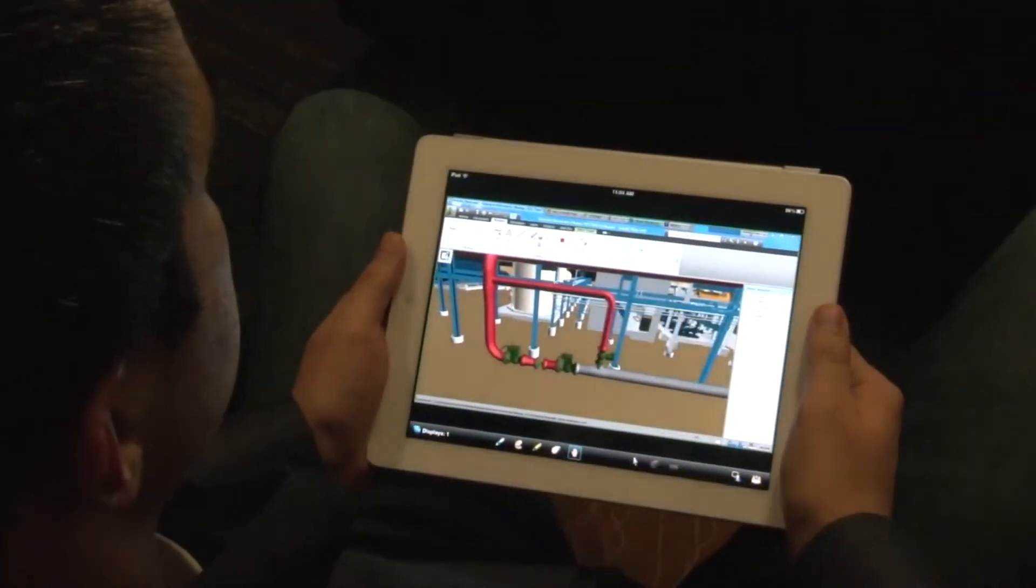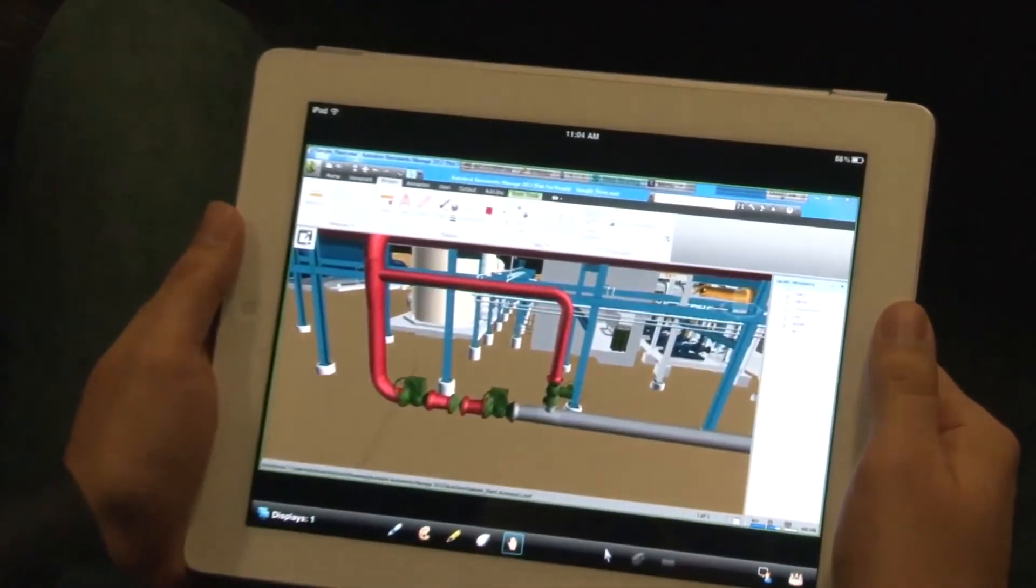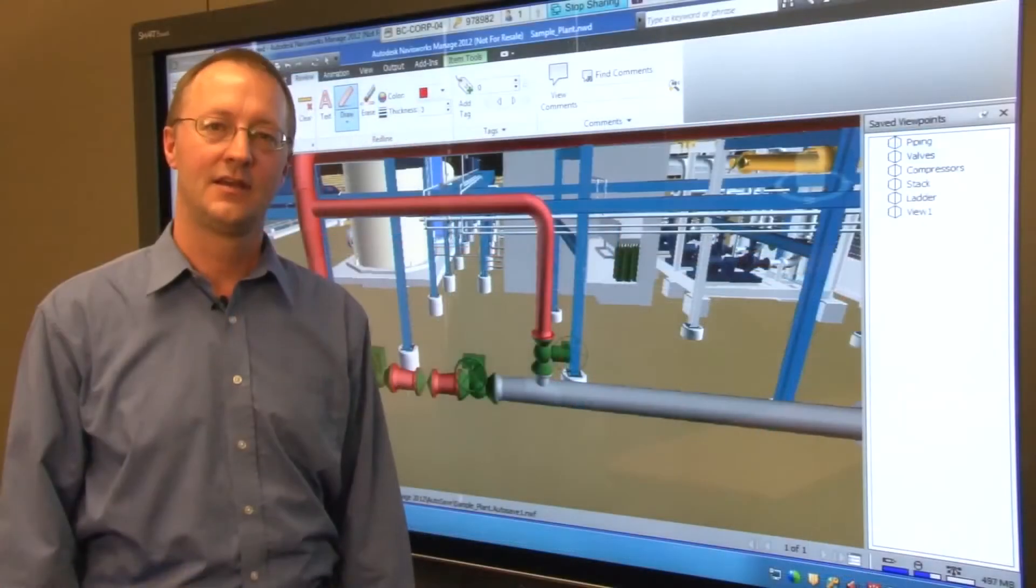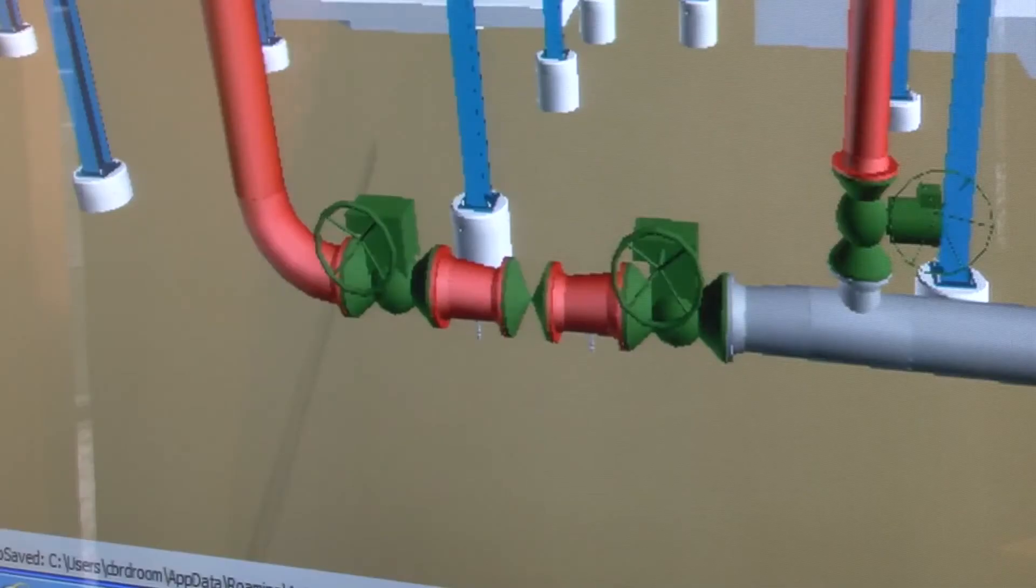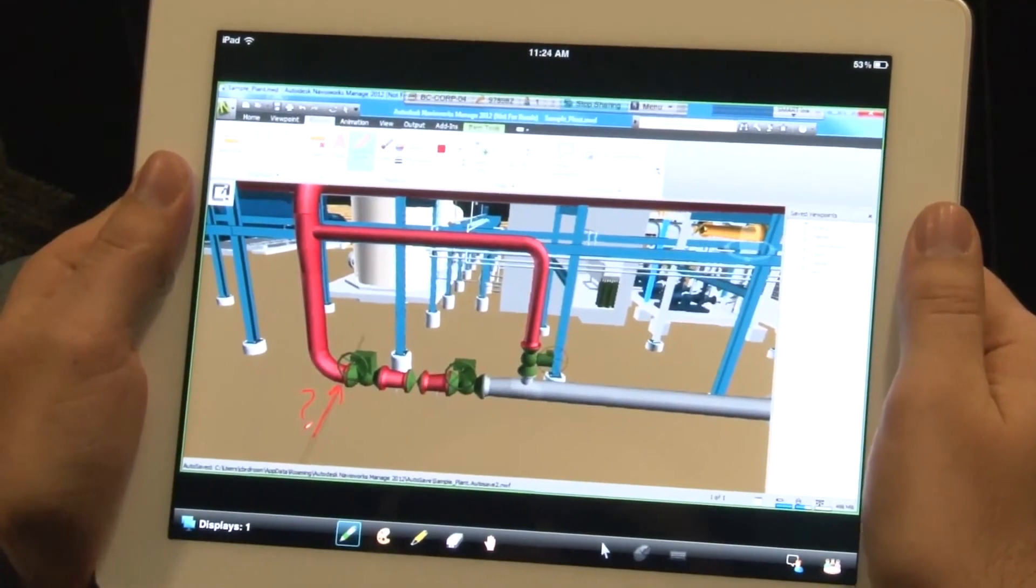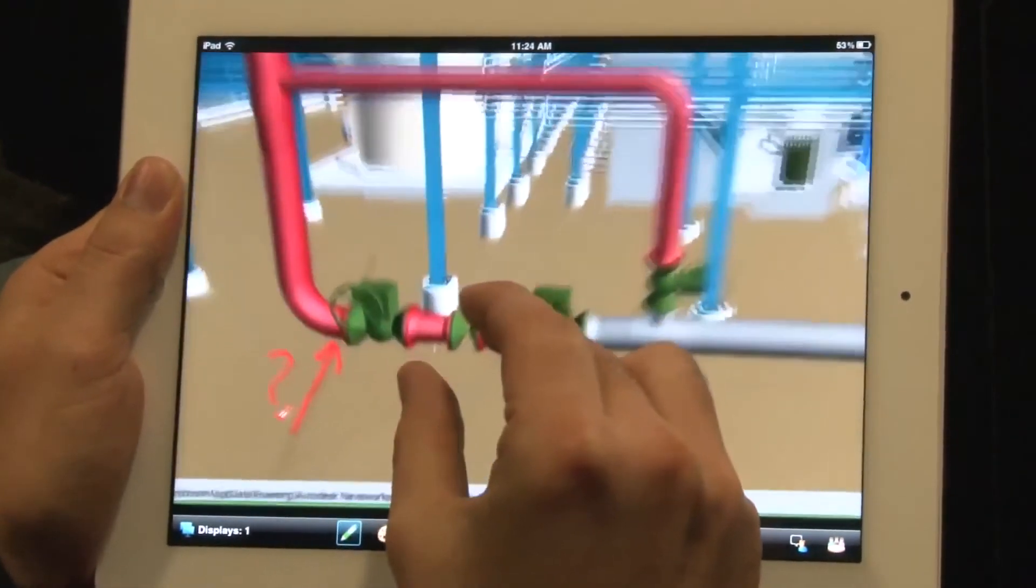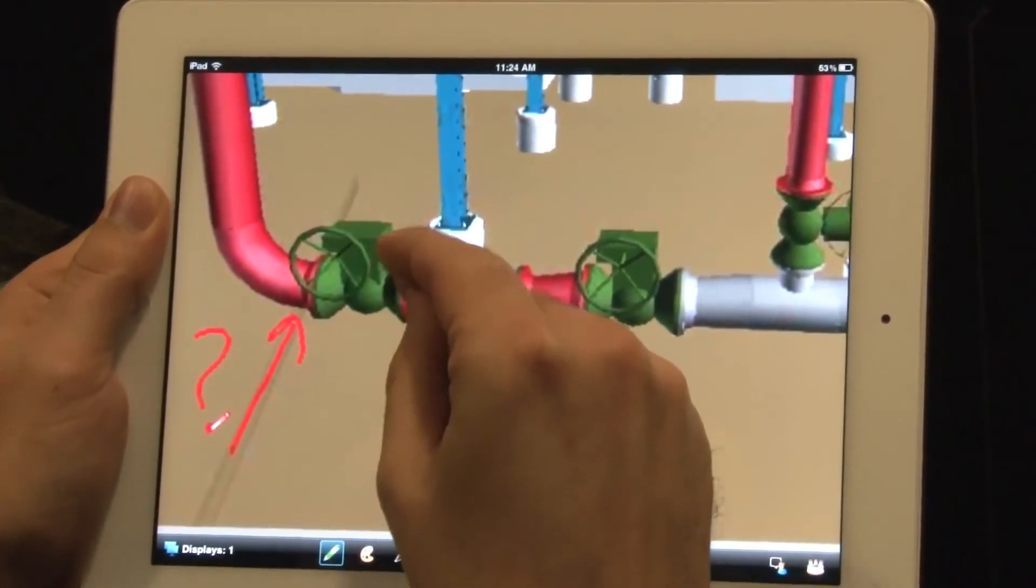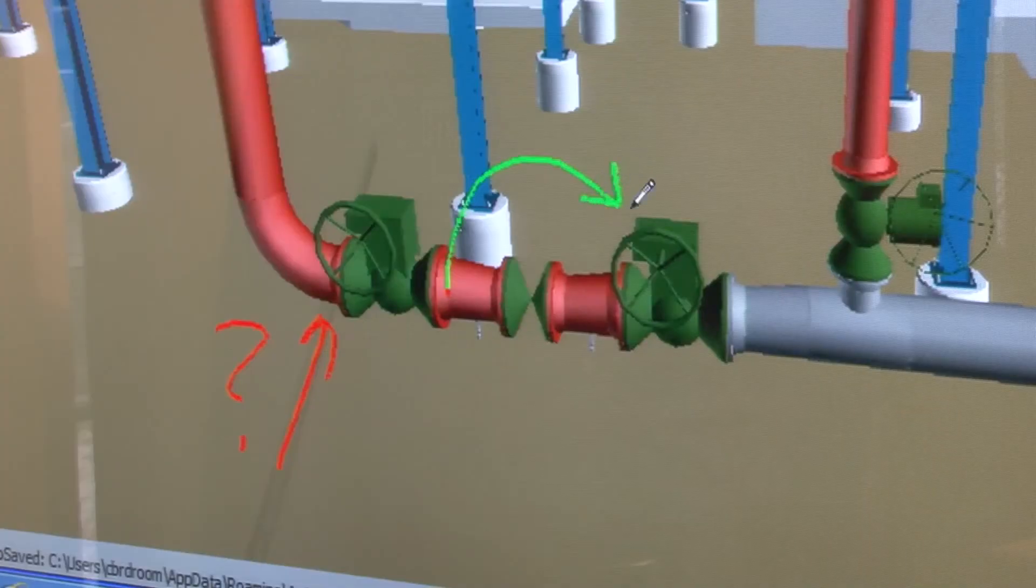Not only can remote participants see your screen, they can also add markups. Here we have a remote user running Bridget conferencing software on their iPad. The remote user can see the markups you are making and they can also remotely markup the view in Navisworks. The remote annotations appear as part of the safe Navisworks view, just as if the remote user was standing beside you and marking up the model.